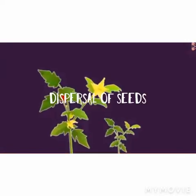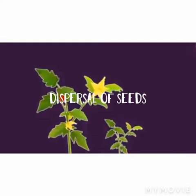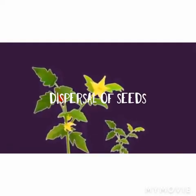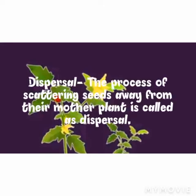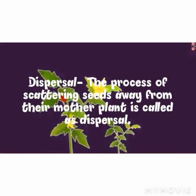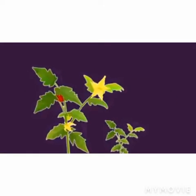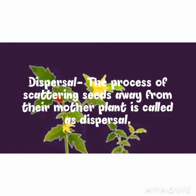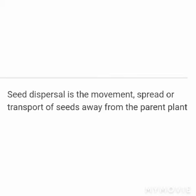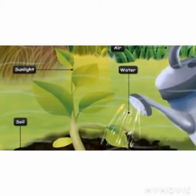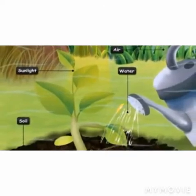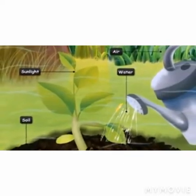Let's start with the definition of dispersal. Dispersal is the process of scattering seeds away from their mother plants. That means seeds are taken away from their mother plant and scattered — scatter means to spread out.